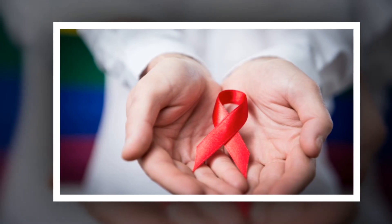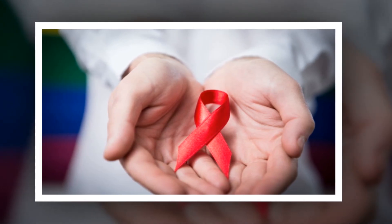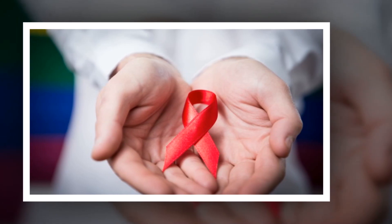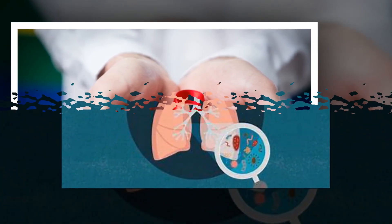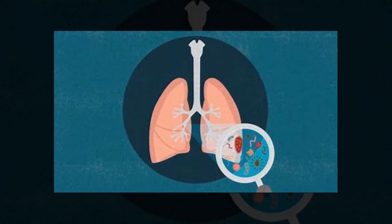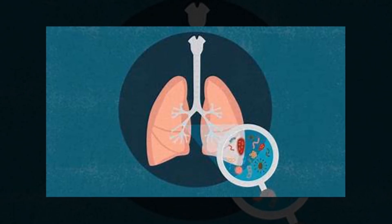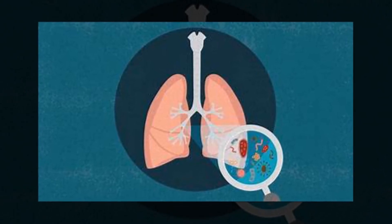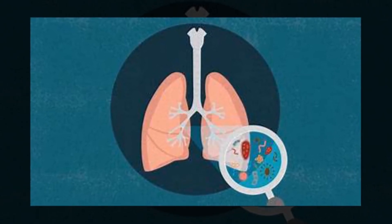HIV weakens your immune system. It hijacks white blood cells called CD4 cells, or T cells. When the virus destroys too many, your immune system can't fend off viruses, bacteria, fungi, and other diseases.